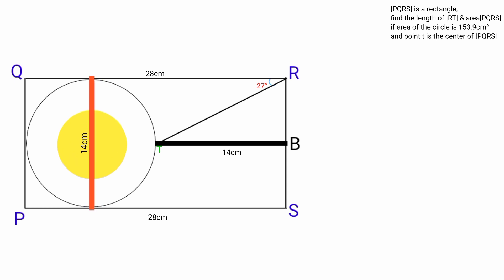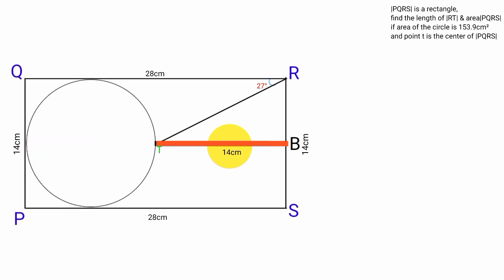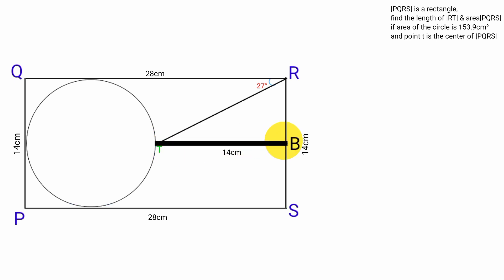Since this line is parallel to RS and passes through the center T, point B bisects line RS. Since line RS is 28 cm, this distance must be 28 over 2 which is 14 cm, and the half from B to S is 7 cm.